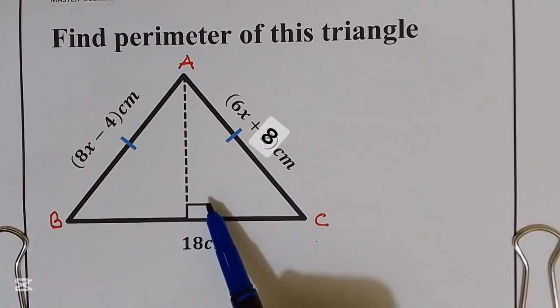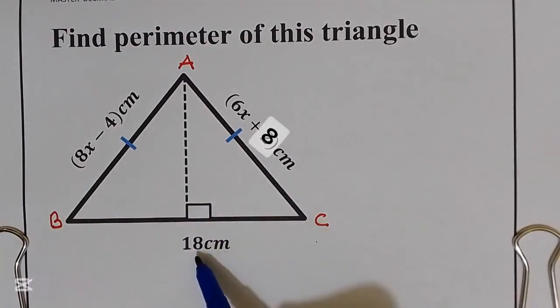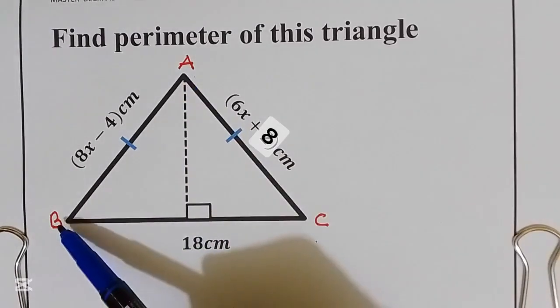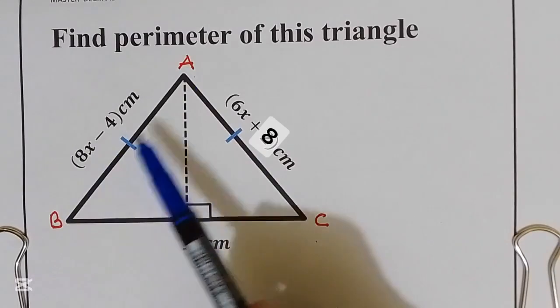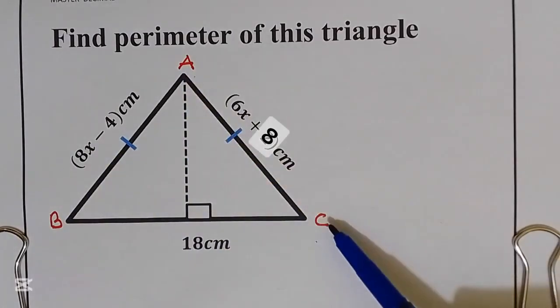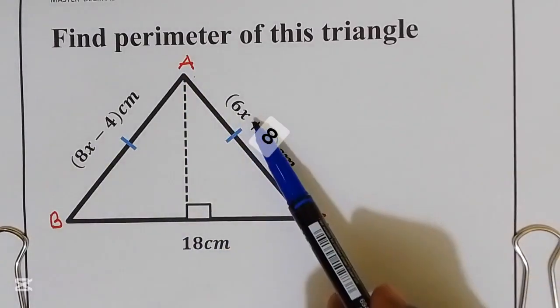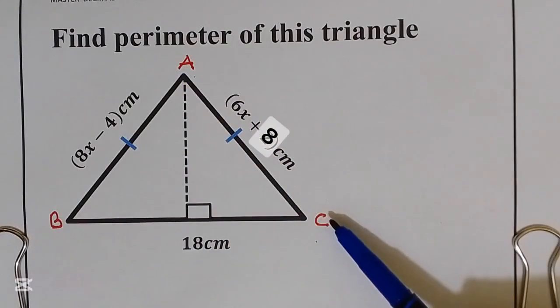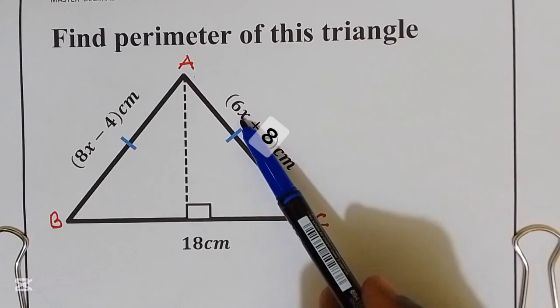But when we look at our triangle we have only distance BC which is 18 centimeters. Distance AB they give us in terms of X and distance AC also they give us in terms of X. So we need to find distance AB and distance AC. The only way we can get those distances, we need first to find the value of X.